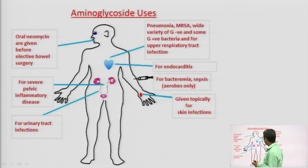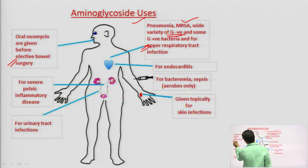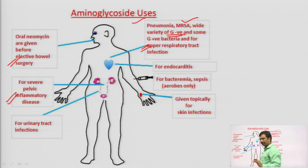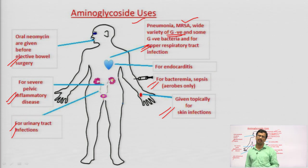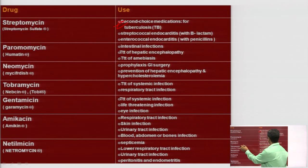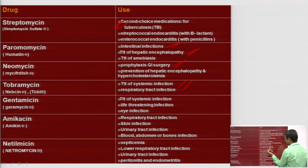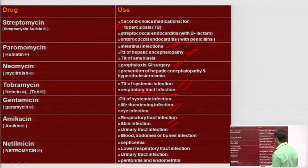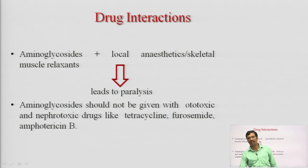Clinical uses: aminoglycosides can be used in pneumonia, MRSA, gram-negative infections, respiratory tract infections (RTI), bowel surgery, pelvic inflammatory disease (very good in combination with beta-lactams), UTI, bacteremia, and nosocomial (hospital-acquired) infections. Specifically: Streptomycin for TB (second choice); Paromomycin for intestinal infections and hepatic encephalopathy; Neomycin for surgical prophylaxis; Tobramycin for topical infections and RTI; Gentamicin for life-threatening and nosocomial infections; Amikacin for RTI and UTI; Netilmicin for septicemia.